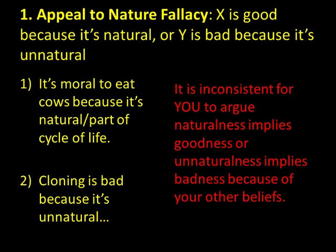Number one is the appeal to nature fallacy. This is when we infer that something is good because it's natural, or something is bad because it's unnatural. Many people argue that it's morally permissible to eat cows and pigs because it's natural — usually arguing it's natural because humans have the teeth for it, it's part of the cycle of life, or because other animals do it.